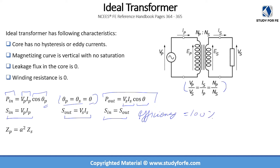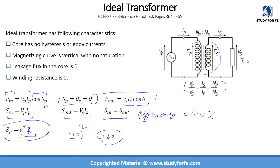Another important concept is reflected impedance. The reflected impedance formula tells us that if we have an impedance Z_s on the secondary, the impedance seen on the primary side is equal to a² times Z_s, where a is the turns ratio. So if the turns ratio is 10, then 10² equals 100, meaning the impedance seen from the primary is 100 times the actual secondary impedance.